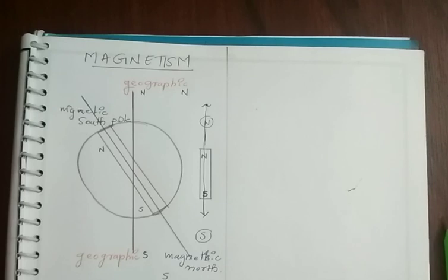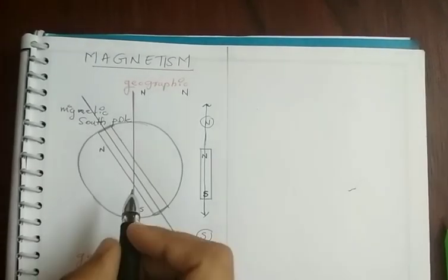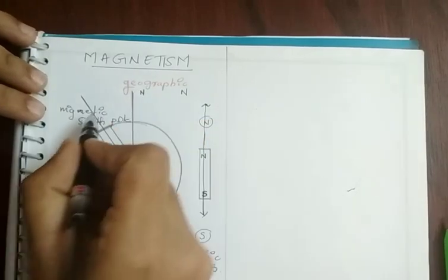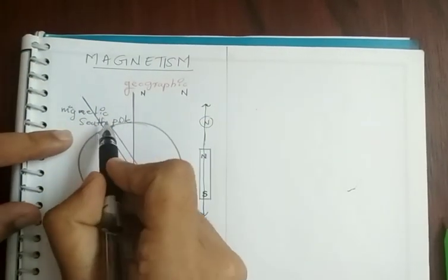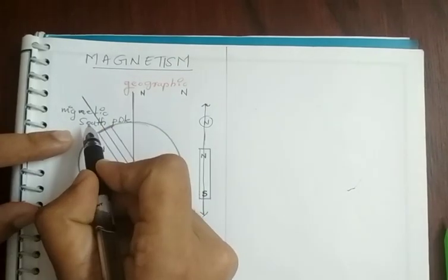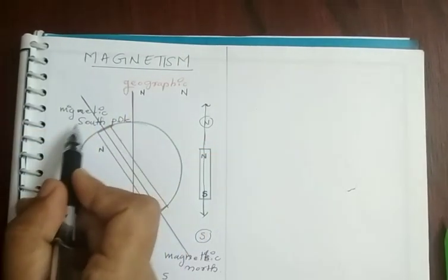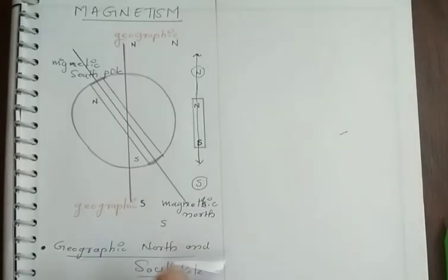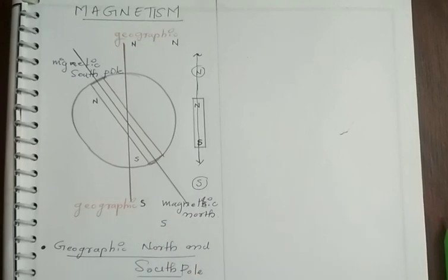So we can say that the earth's geographic north is the earth's magnetic south. Even though there is a slight angle, a slight difference between geographic north and magnetic south, we usually say that earth's geographic north is the magnetic south of the earth, and earth's geographic south is the magnetic north of the earth.